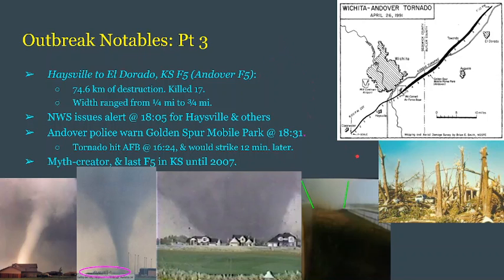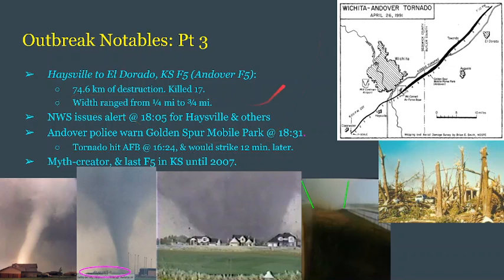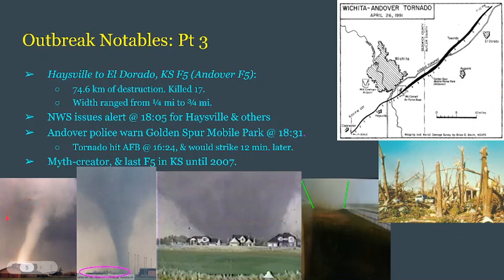Here is the main star of the show and the tornado this outbreak gets its name from: the Haysville to El Dorado, Kansas F5, very commonly known as the Andover F5. This tornado would kill 17 people, accounting for roughly 90 percent of the death toll from this outbreak, and wreaked havoc across 74.6 kilometers. It ranged wildly in width from one-fourth of a mile when it first touched down to three-fourths of a mile when it hit Andover. The track is seen at the top right, an aftermath photo in the middle, and a progressive sequence from earliest to latest time at the bottom.